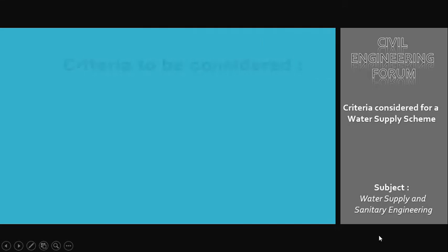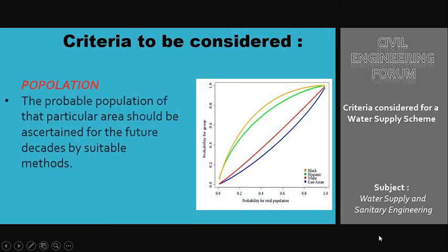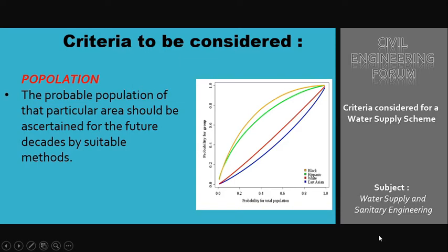The next criteria is population. The probable population of that particular area should be ascertained for future decades by suitable methods. Water supply projects are designed to serve over a specified period, known as the design period. Waterworks are generally designed for about 30 years, and for this next 30 years we should be able to efficiently estimate the population using numerous available methods.